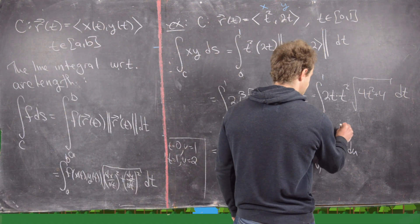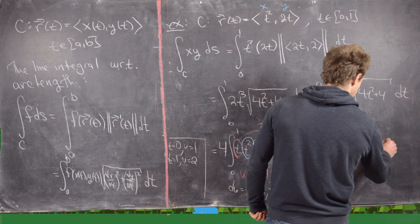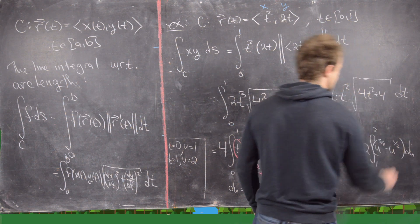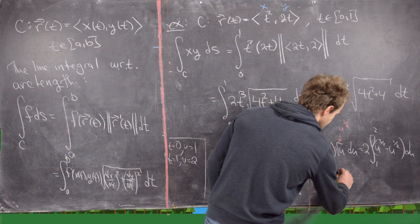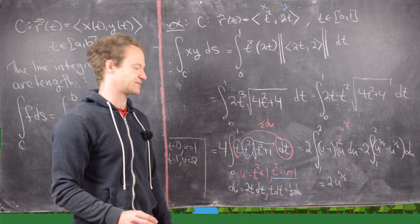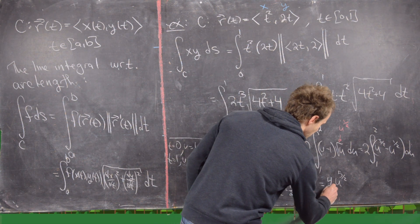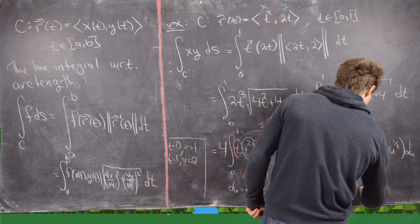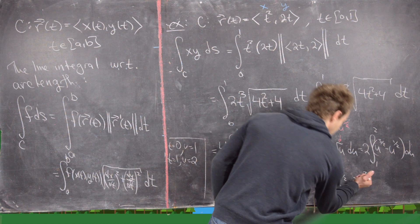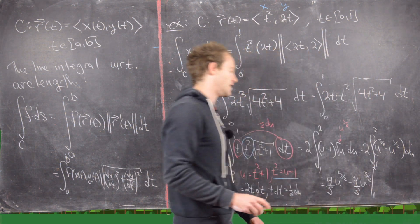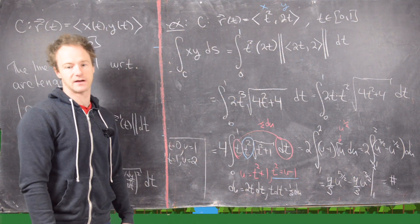Writing the square root of U as U to the 1/2, we get twice the integral from 1 to 2 of (U^(3/2) minus U^(1/2)) dU. Applying the power rule: that's 2 times [(2/5)U^(5/2) minus (2/3)U^(3/2)] evaluated from 1 to 2, giving coefficients of 4/5 and 4/3 respectively. Evaluating from 1 to 2 gives the final numerical answer — a good place to end this example.